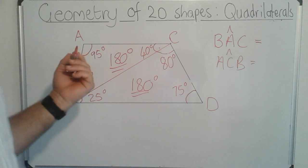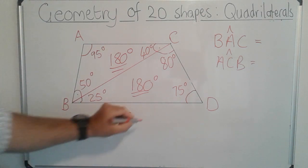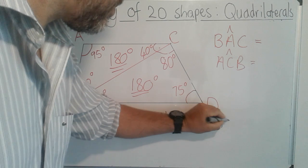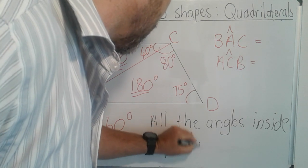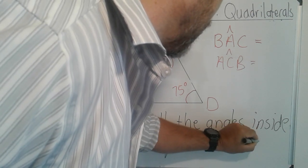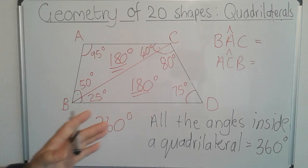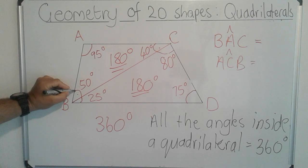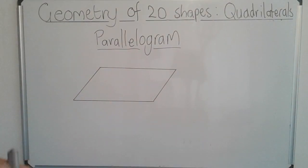So 180 plus 180 is 360 degrees. Therefore our rule with quadrilaterals is: all the angles inside a quadrilateral equal 360 degrees. That applies to any type of quadrilateral — whether it's a square, rectangle, parallelogram, rhombus, or trapezium, every quadrilateral's angles will add up to 360 degrees.